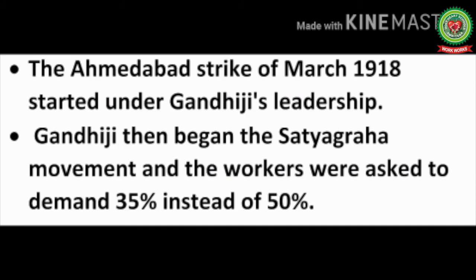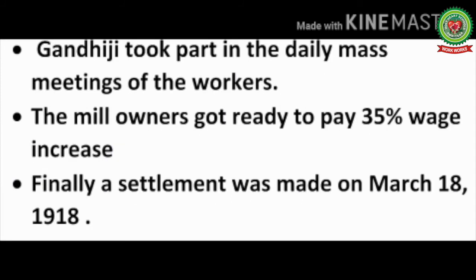The Ahmedabad strike of March 1918 started under Gandhiji's leadership. Gandhiji began the Satyagraha movement and asked the workers to demand 35 percent instead of 50 percent. Gandhiji took part in the daily mass meetings of the workers. Finally, a settlement was made on March 18, 1918, with the mill owners agreeing to pay 35 percent wage increase as demanded by Mahatma Gandhi.